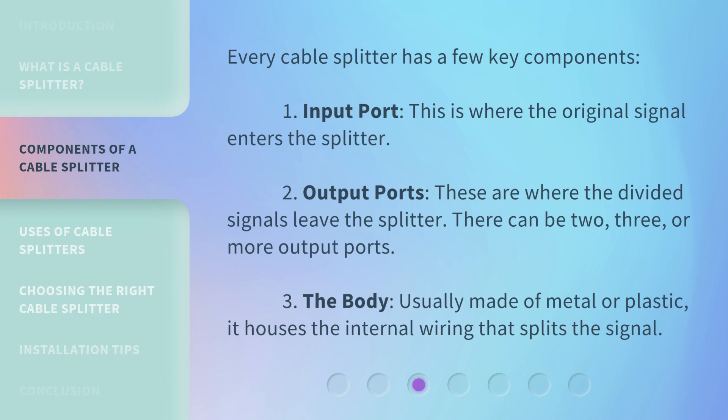Every cable splitter has a few key components. First, the Input Port — this is where the original signal enters the splitter. Second, the Output Ports — these are where the divided signals leave the splitter. There can be two, three, or more output ports. Third, the Body — usually made of metal or plastic, it houses the internal wiring that splits the signal.